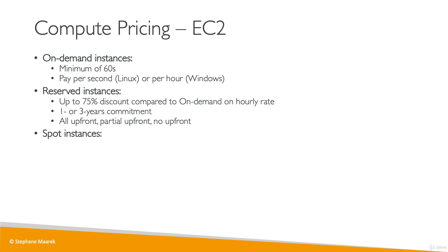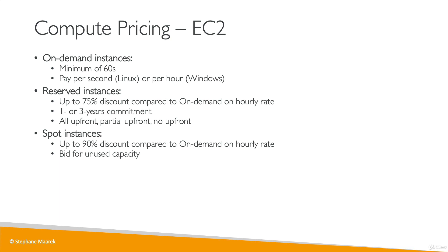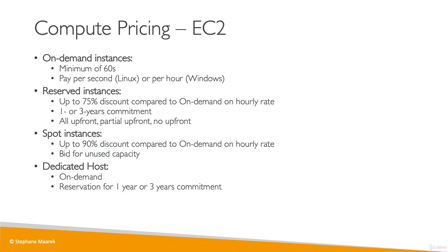You also have spot instances, which give you up to 90% discount compared to on-demand hourly rates. You bid for unused capacity in EC2, and because you use unused capacity you get a very aggressive discount. However, with spot instances you run the risk of losing them if someone is willing to pay more. You can also have dedicated hosts, which can be on-demand or reserved, meaning you run alone on those hosts as they are dedicated to you.